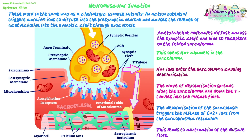Mostly it's the same as what we've looked at before with the synapse, but we have to think about the language we're using. We're talking about the sarcolemma instead of the post-synaptic membrane, and we're talking about the wave of depolarization spreading along the sarcolemma and then down the T-tubules — triggering the release of calcium ions from the sarcoplasmic reticulum. All of that is new and different from the normal regular synapse.